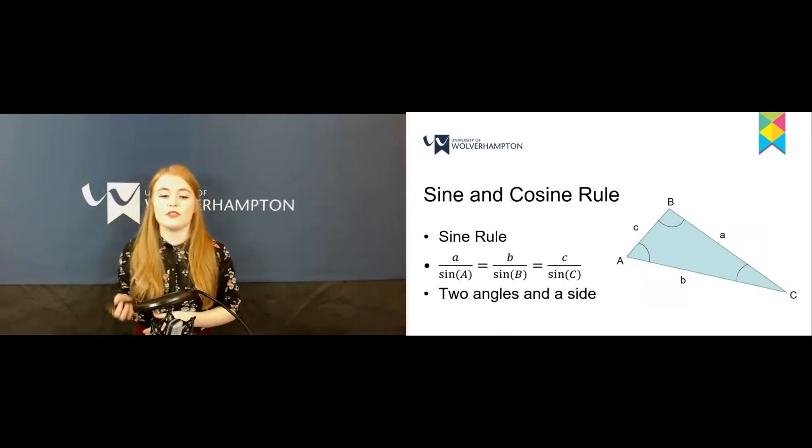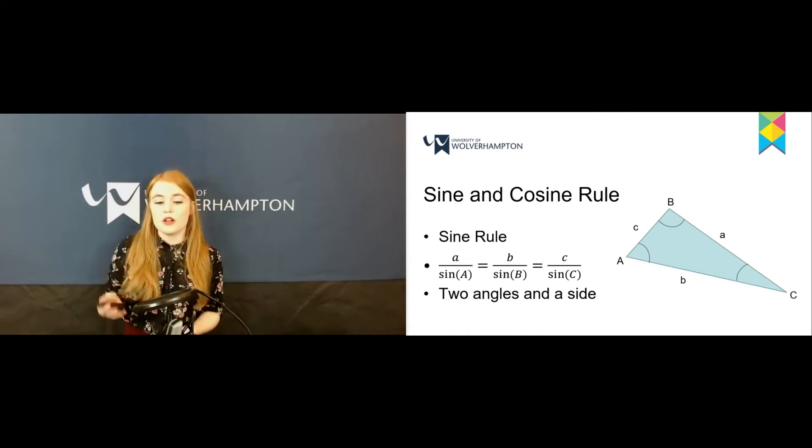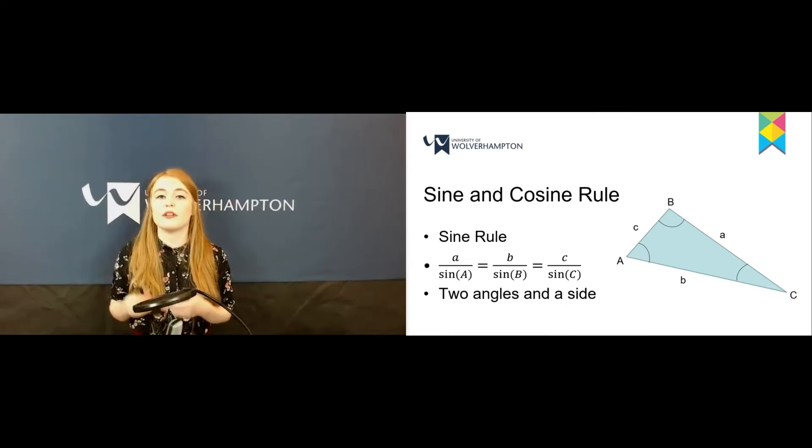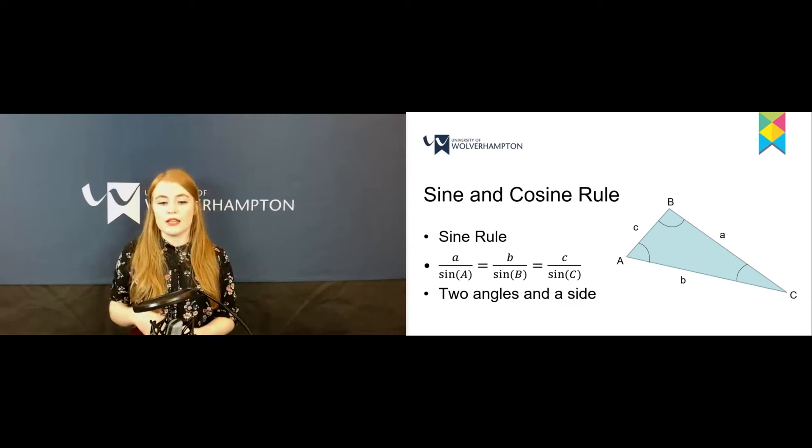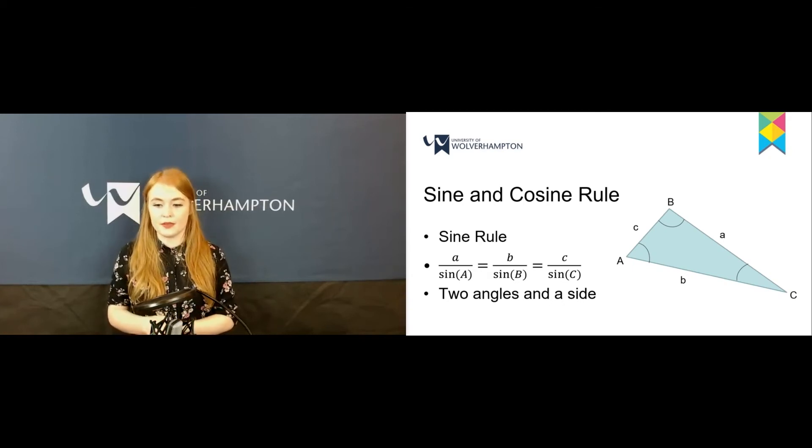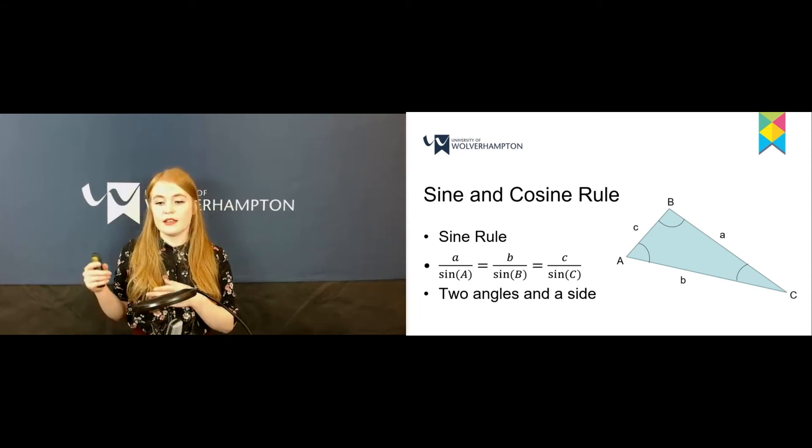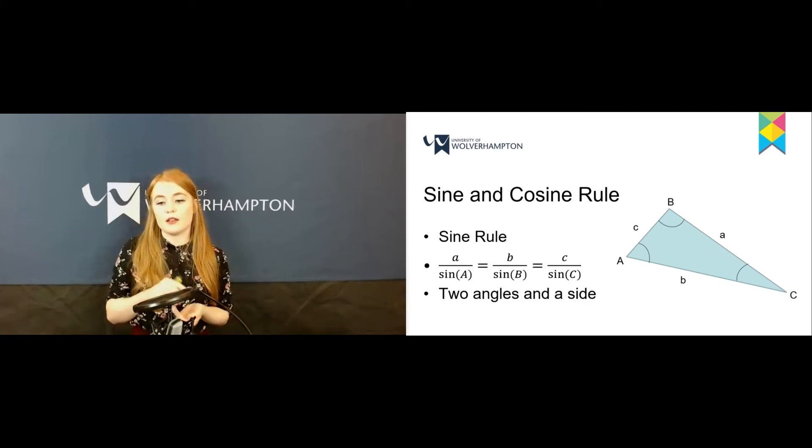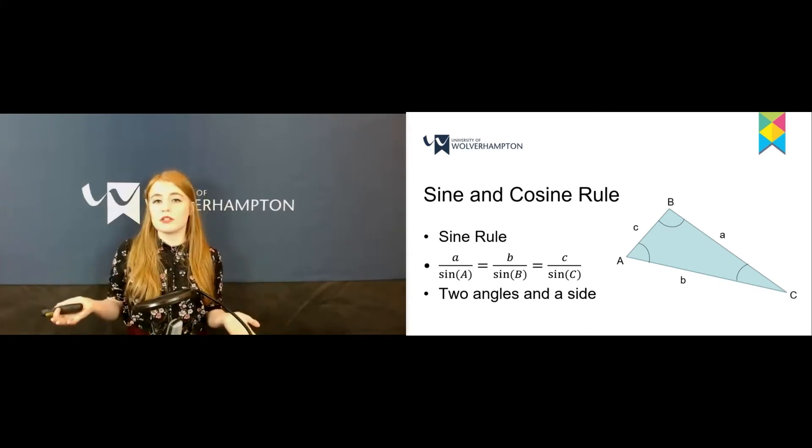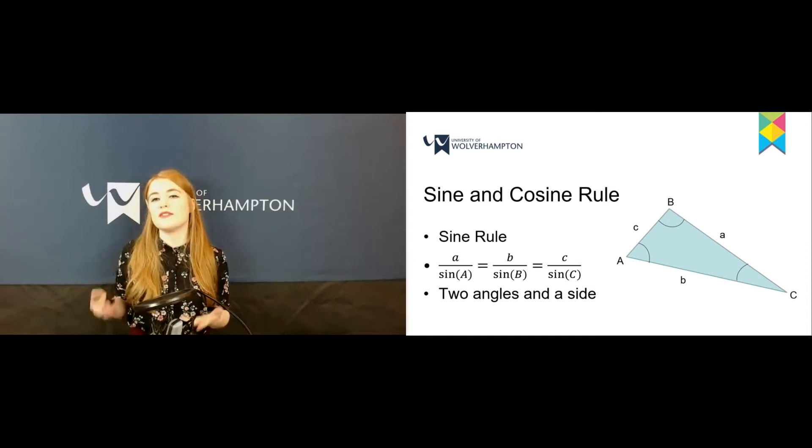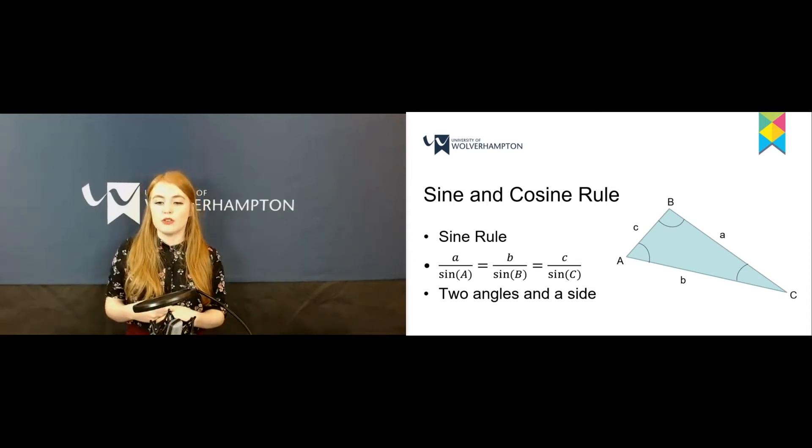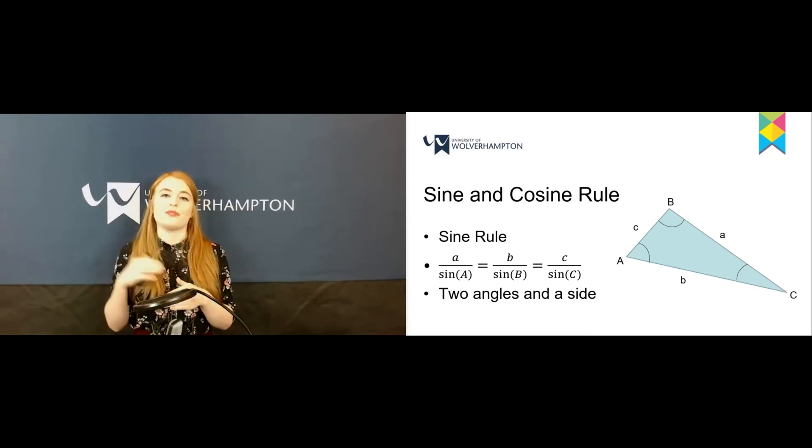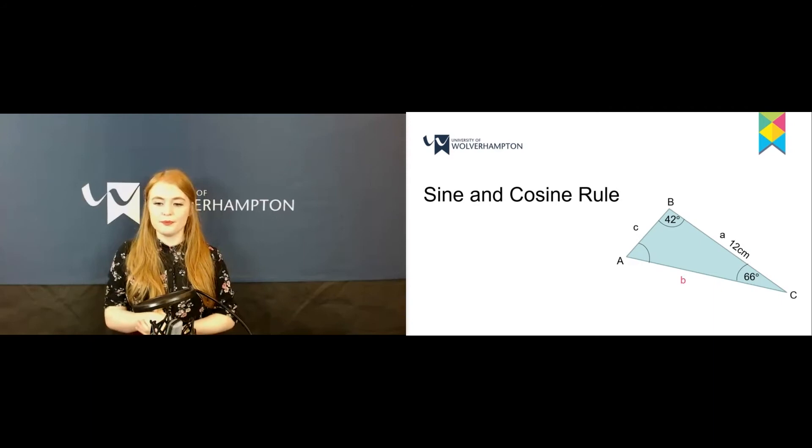The sine and cosine rule. We use the sine rule when we're given two angles and a side. The sine rule is a/sin(A) = b/sin(B) = c/sin(C). When you look at this triangle, the big angle C is opposite the side labeled c, angle A is opposite side a, and angle B is opposite side b. It doesn't matter what letters are given, just make sure your angle is opposite the corresponding side.